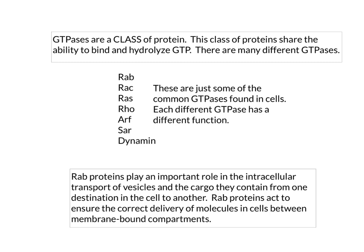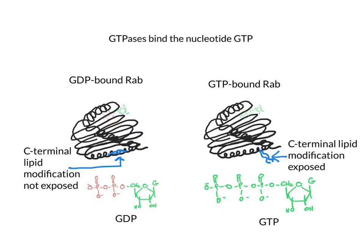The role that RABs play in intracellular transport of vesicles is that they provide a molecular address by binding to other components such as tethering molecules and delivering cargo based on the binding of their tethering molecules to other tethering molecules on their destination compartments. There are two structures: a GTP-bound RAB and a GDP-bound RAB, with the nucleotide binding somewhere in the structure.